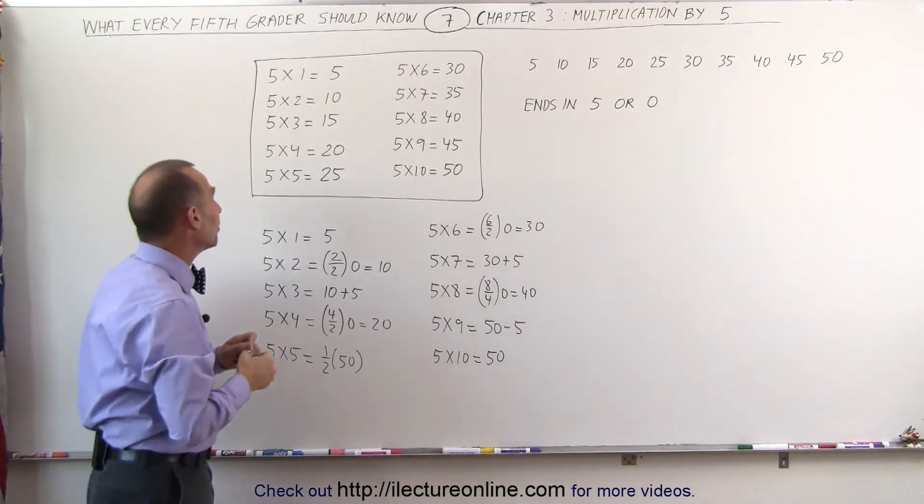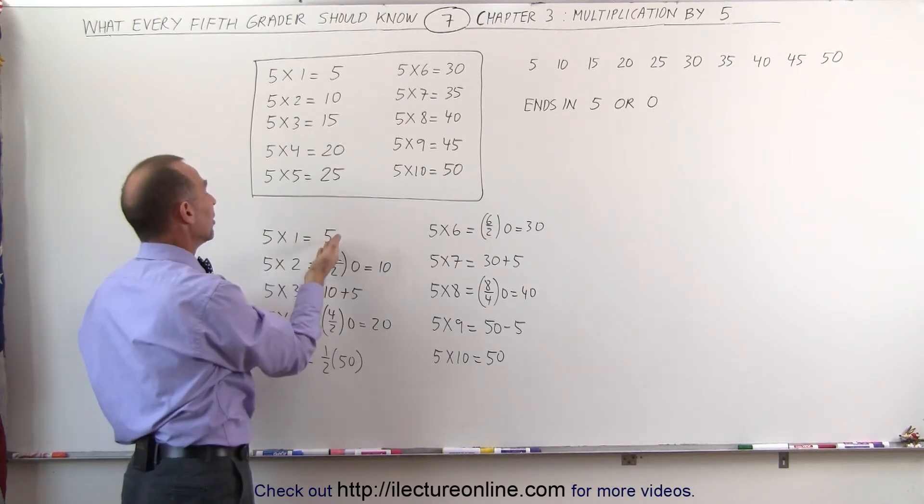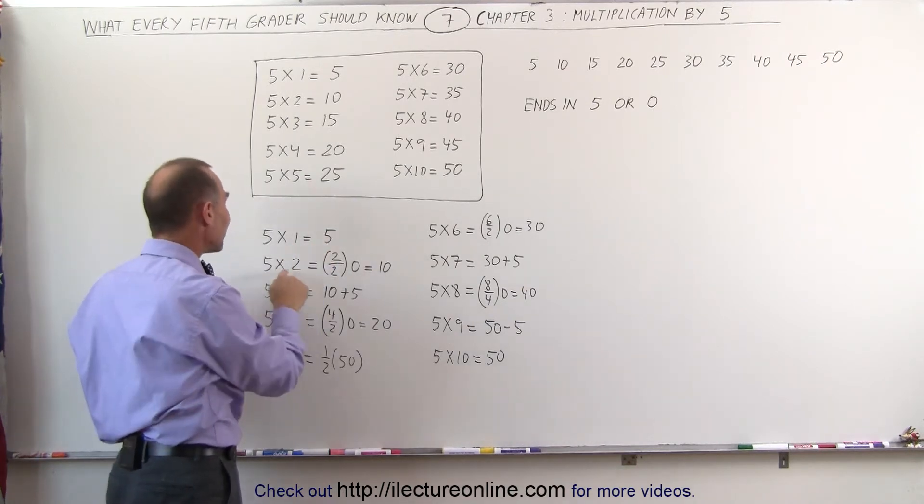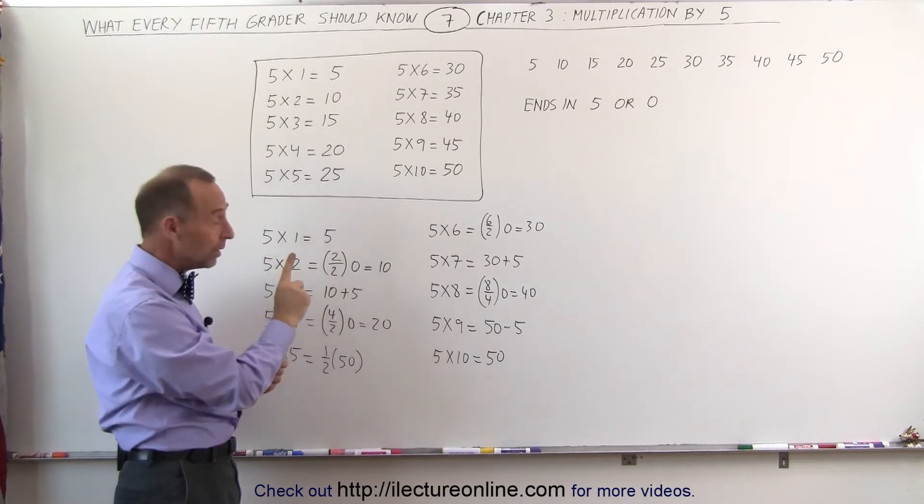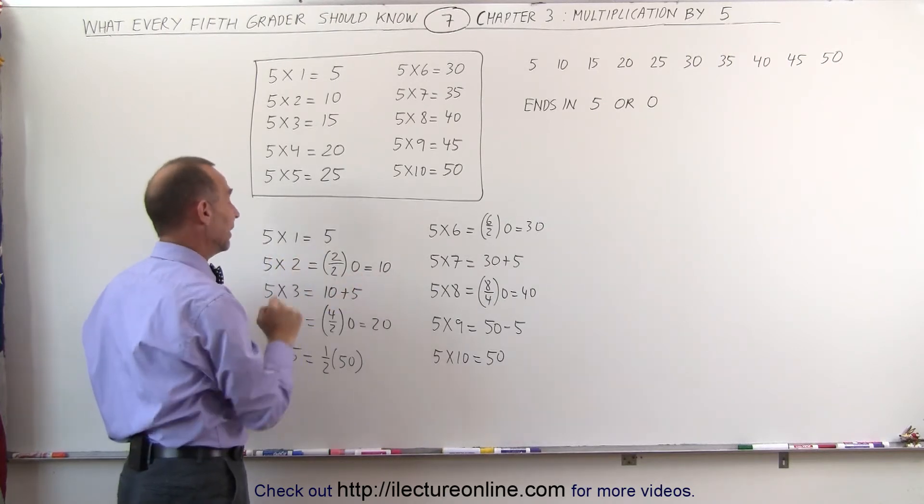Another way of looking at it would be to say, 5 times 1 is easy, that's simply 5. But 5 times 2, take the number 2 divided by 2, you get 1, and add a 0, you get 10.